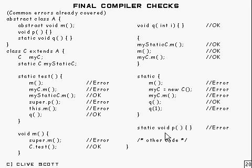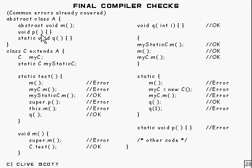We've got static void P — now, that's an error, because that's an instance method and you're trying to override it with a static method. You can't do that.